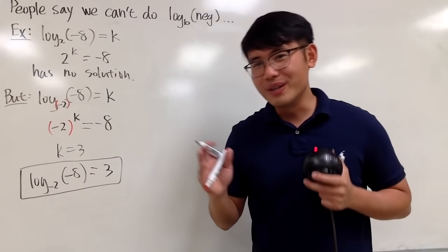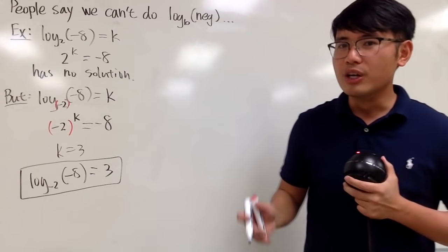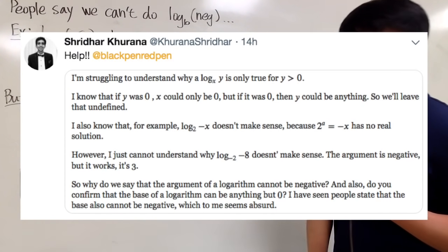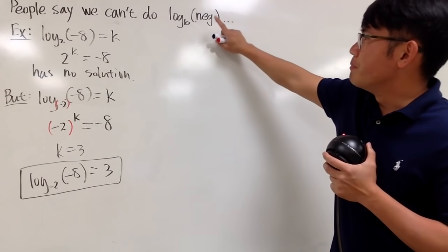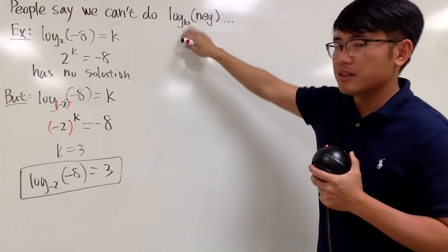So now, before we continue, I just want to give a shout-out to Shiri Ha, because he's the one who sent me this on Twitter. And now I'm going to explain why do people say we cannot have negative numbers inside of logarithms?